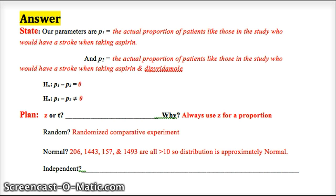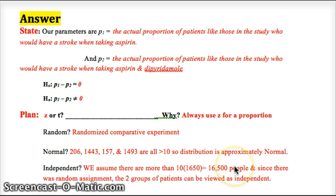There's no replacement, so the ten percent condition. It's also a randomized experiment, so there shouldn't be a lurking variable that would have influenced whether one group would be biased or not. So we assume we're not sampling more than ten percent of the population. Since we use random assignment, the two groups of patients can be viewed as independent for this experiment. Our conditions are satisfied.